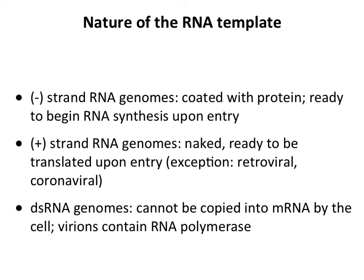Plus-strand genomes are typically naked in the virion — poliovirus RNA, for example, gets translated immediately upon cell entry and doesn't need to bring anything with it. There are two exceptions: retrovirus genomes are complexed with proteins because the RNA must be copied back to DNA, requiring enzymes brought in with the particle. Coronaviruses are also unusual — they have plus-stranded RNA genomes but enter the cell complexed with proteins, possibly due to their very long RNA genomes.